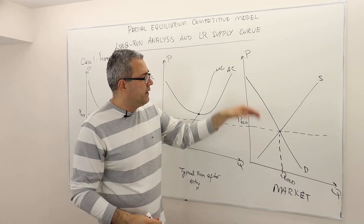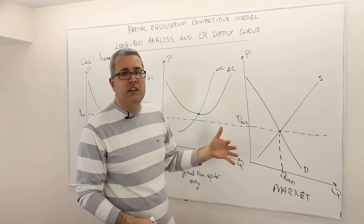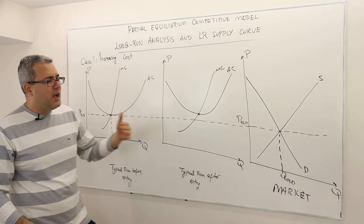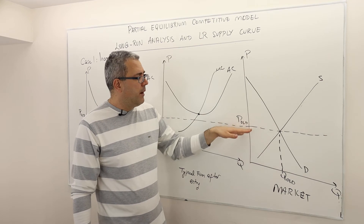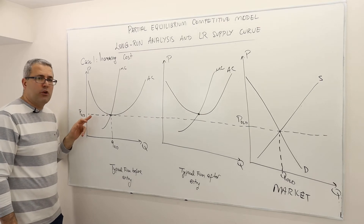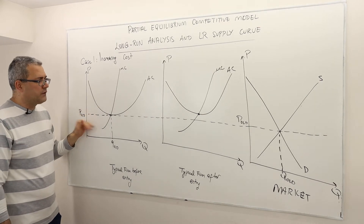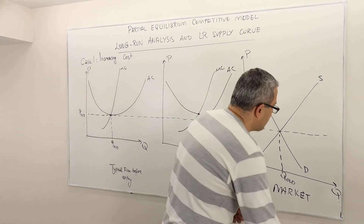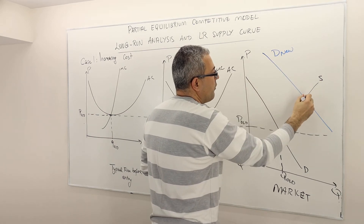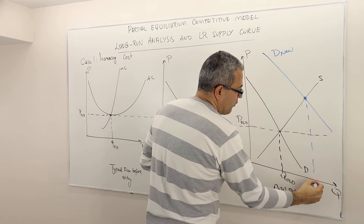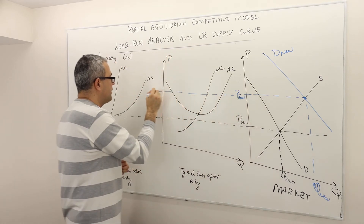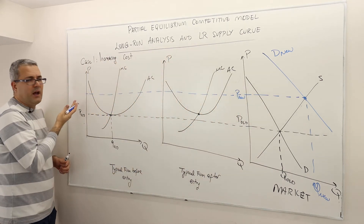The third graph shows the market demand and market supply curves. Initially the market is in long-run equilibrium — supply and demand intersect, and each firm earns zero profit (price equals average cost). Now suppose demand shifts to the right. This is the new demand, giving a new market quantity Q_new and a new higher market price P_new.